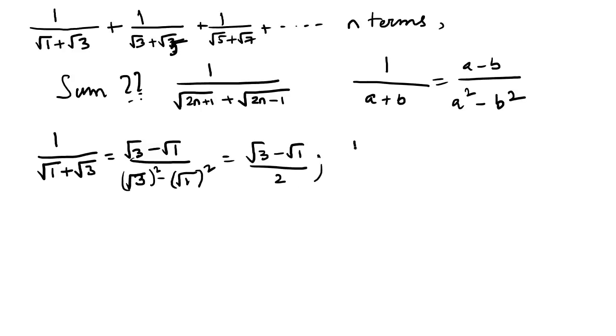Similarly, 1 by root 3 plus root 5 is equal to root 5 minus root 3 divided by root 5 squared minus root 3 squared.